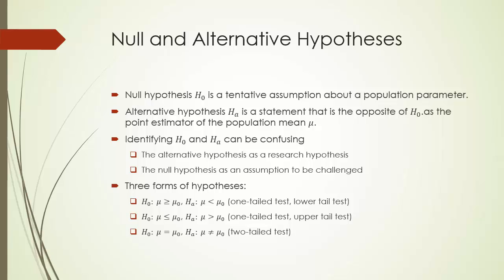Null hypothesis is an assumption you want to challenge. A convenient way is to think of null hypothesis as an established assumption or the default assumption. Alternative hypothesis, more often than not, is a statement you want to establish to replace the established or default assumption. For example, Toyota claims that, according to EPA, Prius has a gas mileage of 50 miles per gallon in a city.